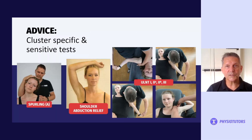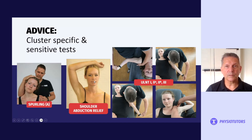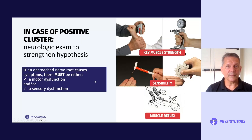The advice from that systematic review was to cluster the specific and sensitive tests: the Spurling A test, which we'll cover shortly; the shoulder abduction relief test; and combining all your upper limb neural tension tests. The shoulder abduction relief test is a simple one — patients put their arm above their head and find relief of symptoms. Sometimes patients will tell you this themselves during history taking, which is a nice sign, but it's not often present.